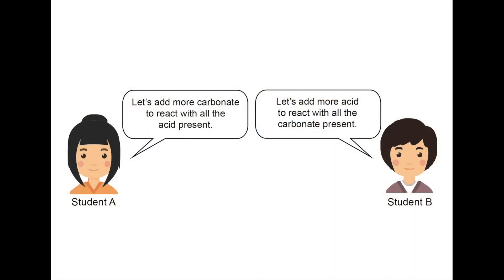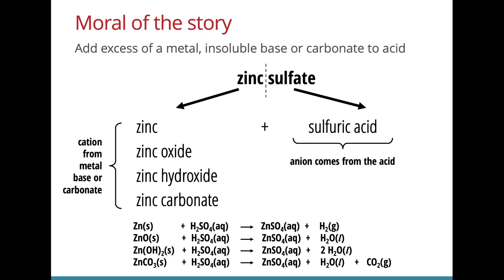So we have a dialogue between two students here. One says that we should add an excess of a carbonate to react with all the acid present. While student B says we should add more acid to react with all the carbonate present. Who do you think is right? I would agree with student A because by adding an excess of the carbonate, the excess carbonate can be filtered off and removed. However, if we follow what student B does, the excess acid is difficult to remove and you will contaminate the salt that we are forming. When it comes to this matter of salt preparation, the moral of the story is to add an excess of a metal, base or carbonate to an acid and then filter off the excess. This is to ensure we do not be left with an excess of acid which is difficult to remove later on.